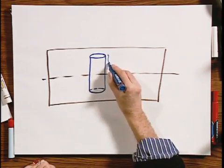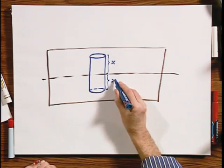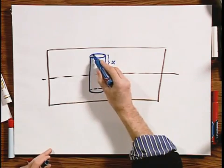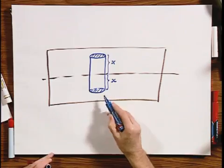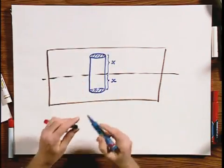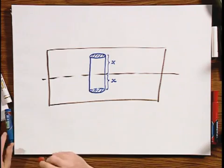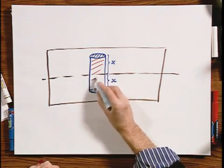This distance now is x, and this distance now must again be x. You're going to calculate now the flux that escapes from this surface and the flux that escapes from this surface. There is no flux escaping from the vertical surface, and you are now going to put that equal to all the charge inside divided by epsilon zero.